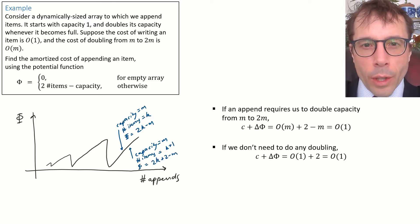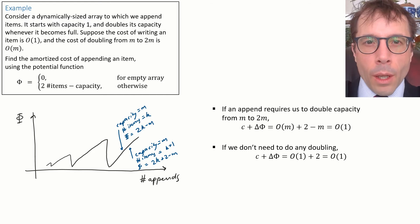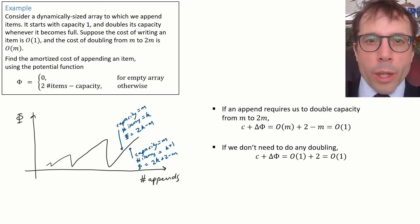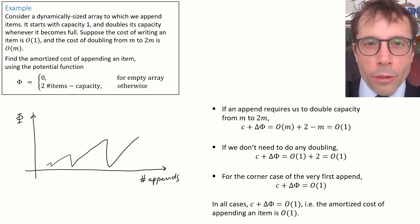In the other case, the case where we don't have to do any doubling, the amortized cost C plus delta phi is the true cost big O of 1 plus the change in potential, which is pretty easy to work out is 2, and this comes out again to be big O of 1. And one or other of these two cases applies to every single append operation we perform, apart from the very first, which we can write up for completeness. We've already worked this one out explicitly and come up with the answer big O of 1.